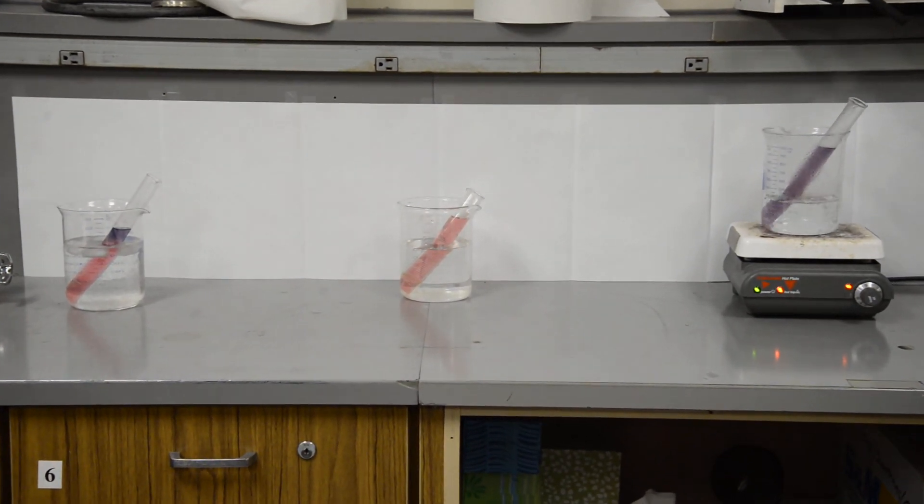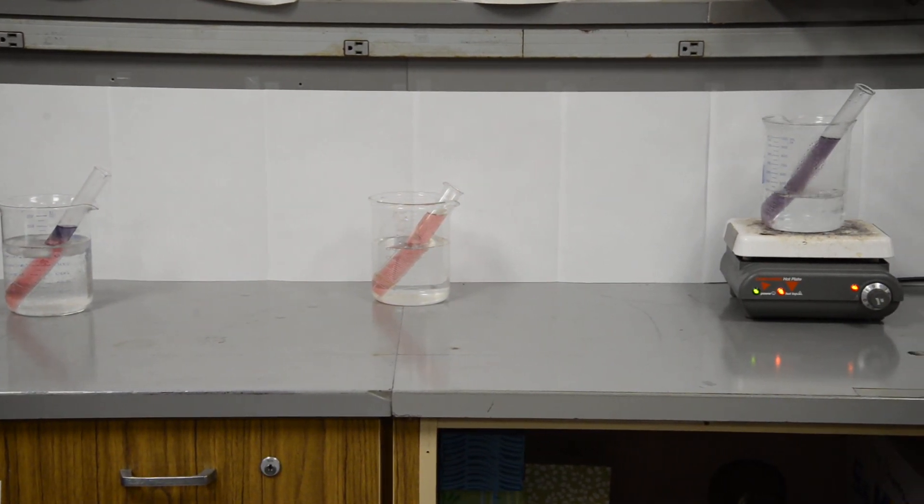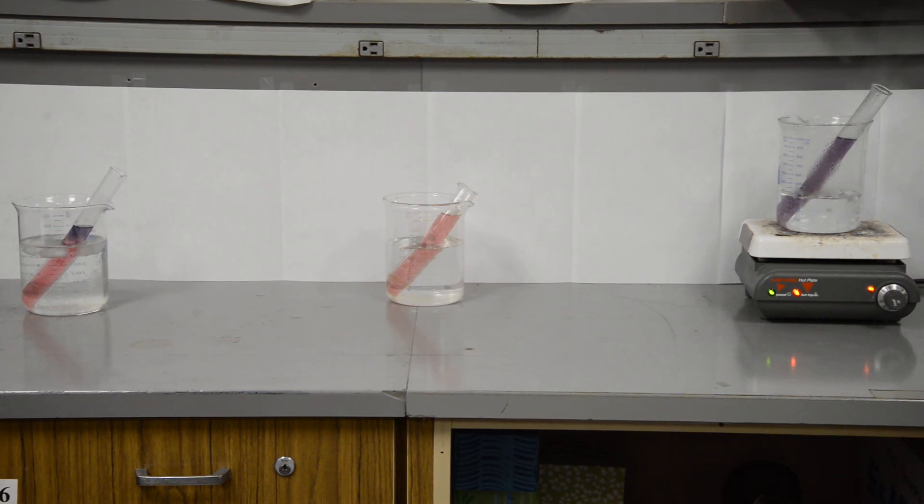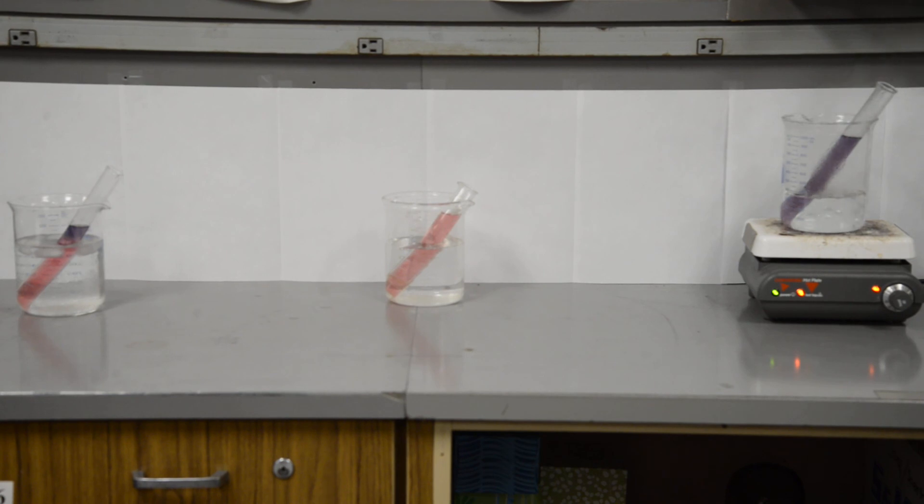That will get darker until it gets to the blue that we had in that side. You can see that we have exactly the same stuff in all three of those tubes. They did change color as the equilibria were shifted according to Le Chatelier's principles. Thank you for watching.